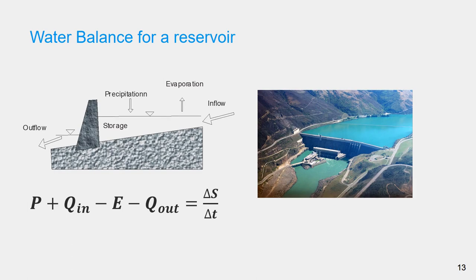The water balance equation for reservoirs and lakes for any time interval may be written as the equation shown here, where P is the precipitation on the surface of the lake or reservoir, and E is the evapotranspiration from the surface of the lake.